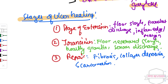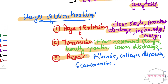To summarize the stages of ulcer healing: stage of extension has floor slough, purulent discharge, and inflamed edge and margin. Transition has separated slough, healthy granulation, and serous discharge. Repair has fibrosis, collagen deposition, and scar formation.